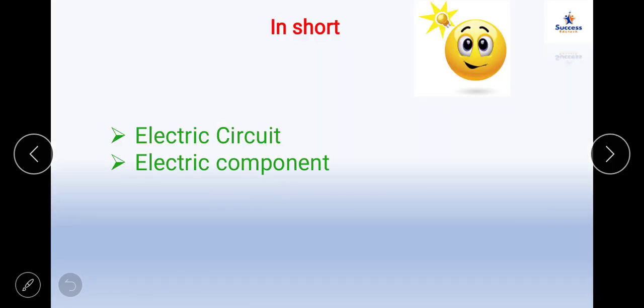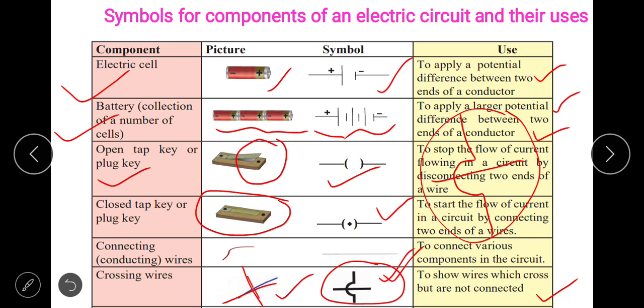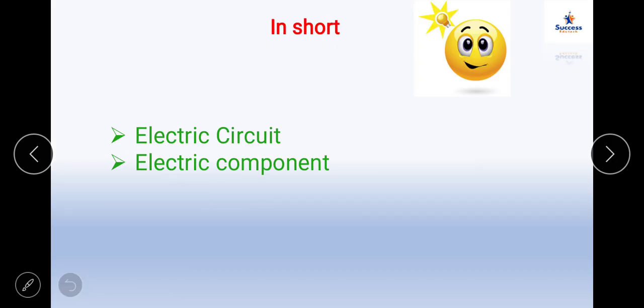In short, today we have studied all the electrical components which make an electric circuit. We should be aware about the symbols — just remember all the symbols here, because in circuit diagrams you are going to use only symbols and not pictures. You should also know why each component is used, as this will help you write one-line answers and fill in the blanks in your question paper. Keep clear knowledge about it.